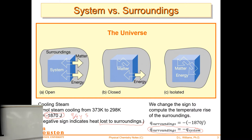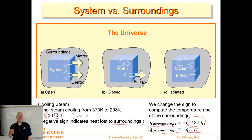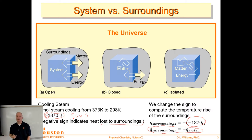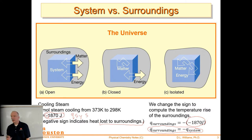A lot of times people think the negative sign on the surroundings side is the same as the negative sign inside Q_system, and it's not. The whole expression is Q_system, which has a negative sign inside it. So Q_surroundings becomes positive — that's where that negative sign goes when we talk about the surroundings.